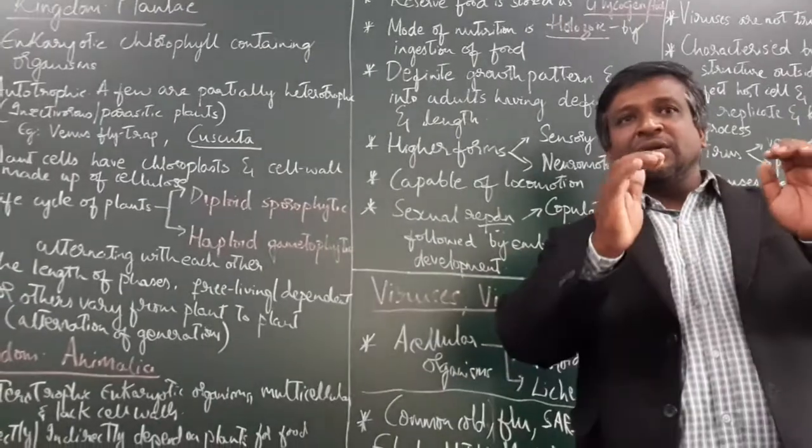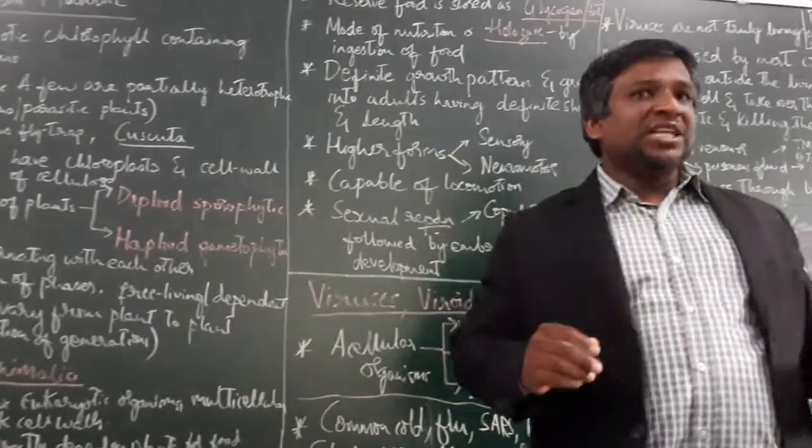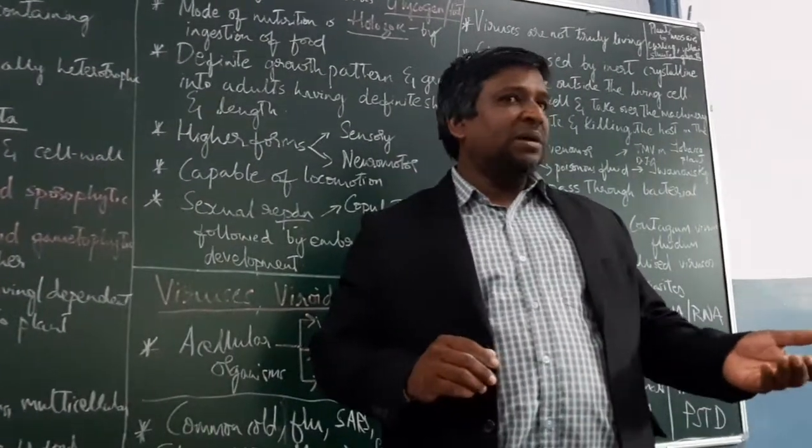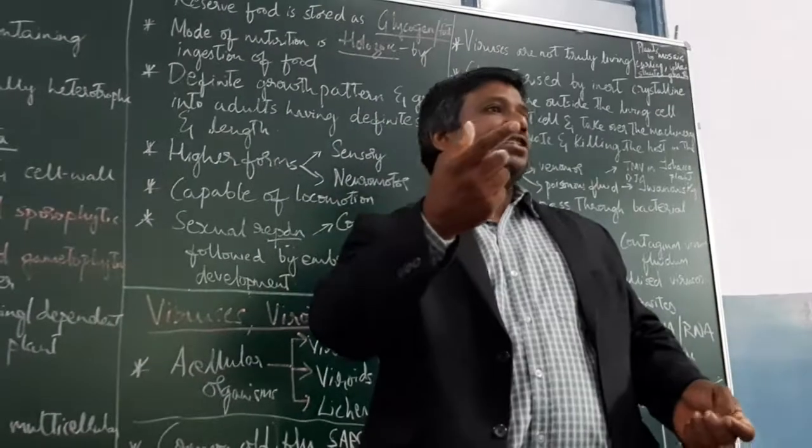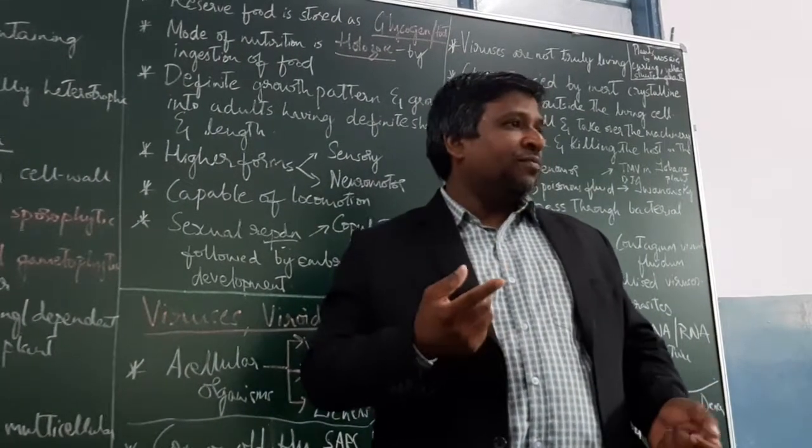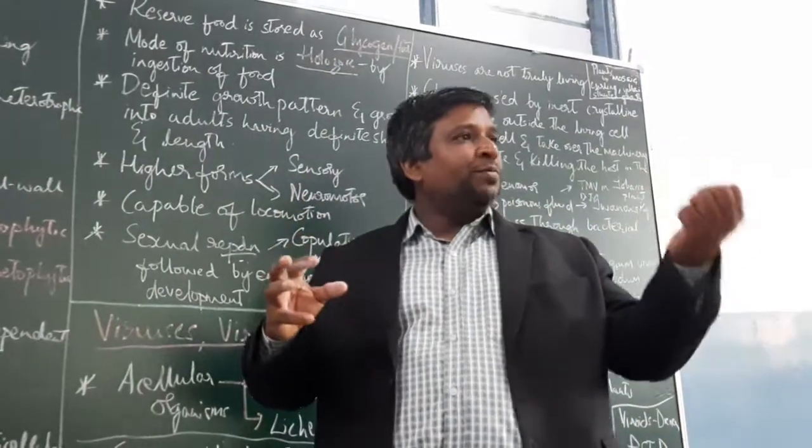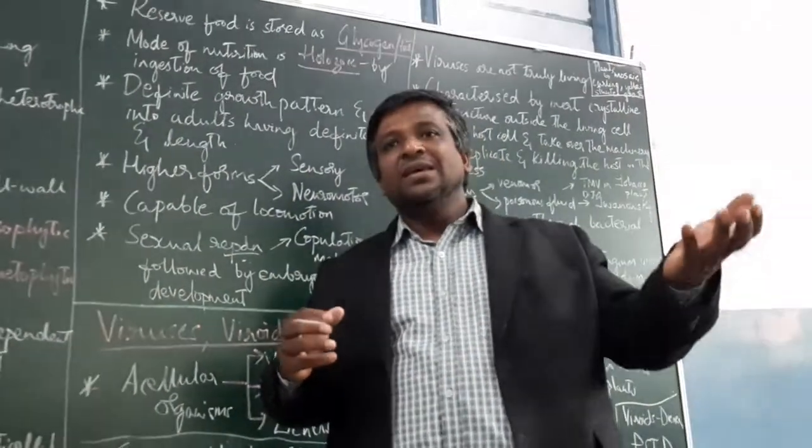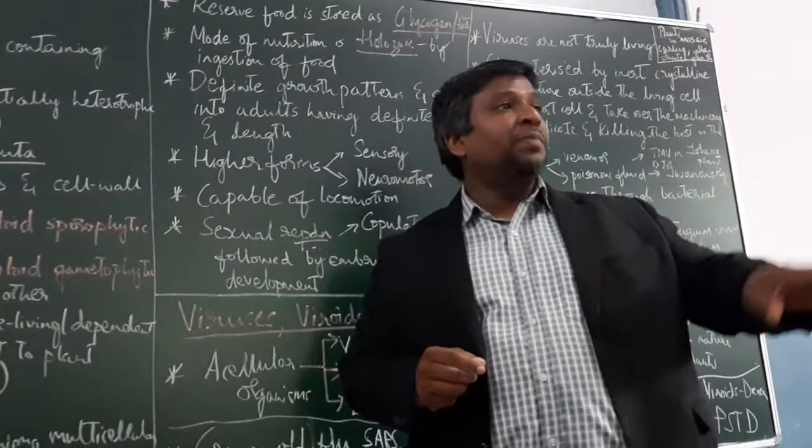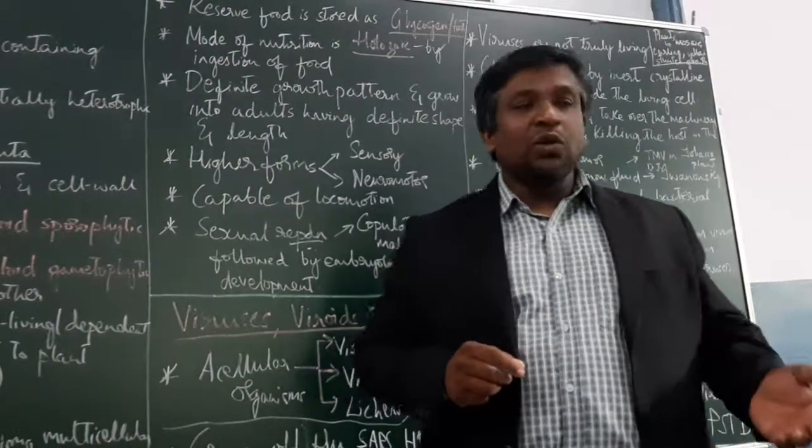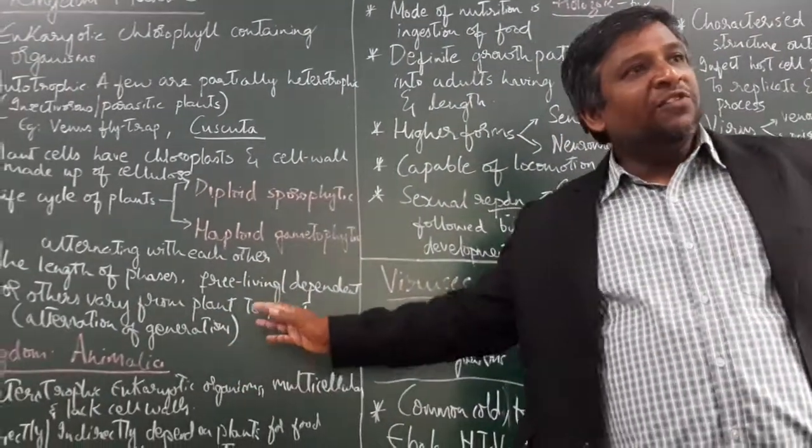Gynoecium structure: gynoecium has ovary, style, and stigma. When you talk about androecium, it is a collection of stamens with anther and filament. The filament where it connects to the anther we call the connective. The anther has anther walls and sporogenous tissue which later forms the haploid pollen grains with haploid sperm cells.